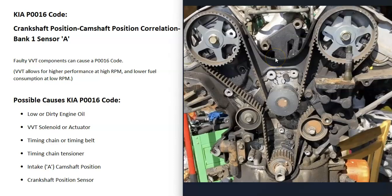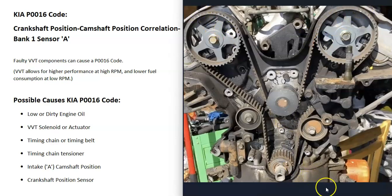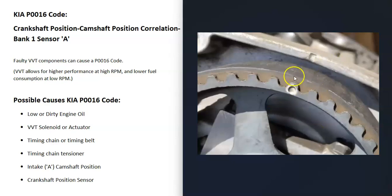Or if the timing belt becomes really old and stretched out, it's going to cause issues. The basic way to check this is that there are markers to see if everything is lined up. For example, here's a marker for this pin to line up right here, here's a dot that lines up right here, and here's another dot that lines up right here — all of these need to match up. If one's before or after where it should be, that belt slipped and will need to be replaced. Keep in mind that if the belt is really old and stretched out, it can also throw off the timing.